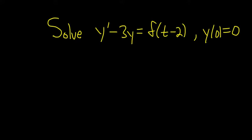Solve y' minus 3y equals the direct delta of t minus 2, y(0) = 0. Solution.